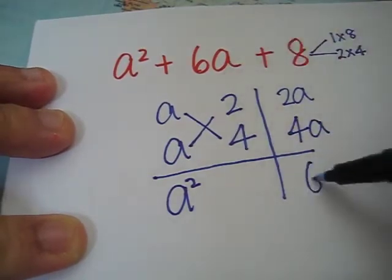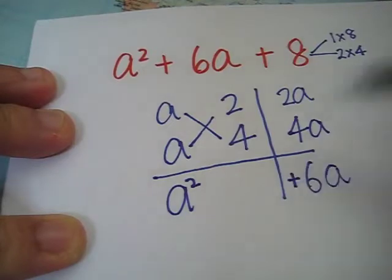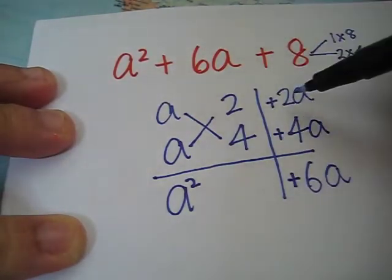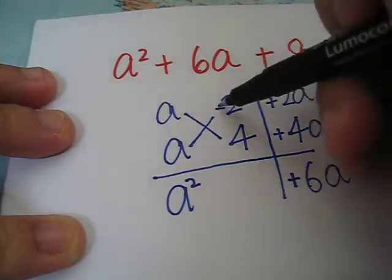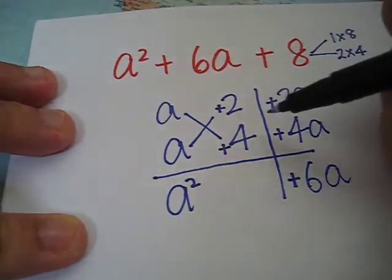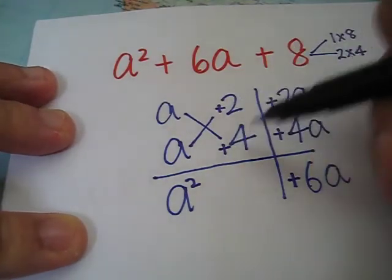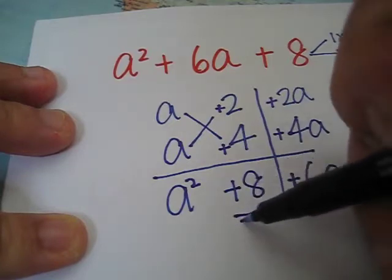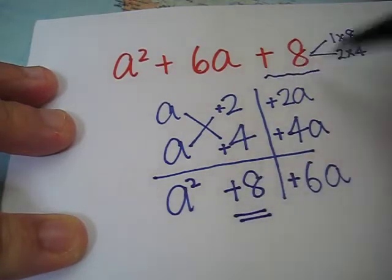To get 6a, which is positive, it means these two terms are positive. If this is positive, it means this is positive. If here it's positive, it also means it's positive. Let's check. Positive 2 times positive 4 will give us positive 8, which is the same as this. So, we get a squared plus 6a plus 8. Therefore,